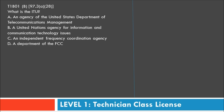Let's start on section B with question one: What is the ITU? Your potential answers are: A) an agency of the United States Department of Telecommunications Management, B) a United Nations agency for information and communication technology issues, C) an independent frequency coordination agency, or D) a department of the FCC. We are referencing Part 97.3, paragraph 28.